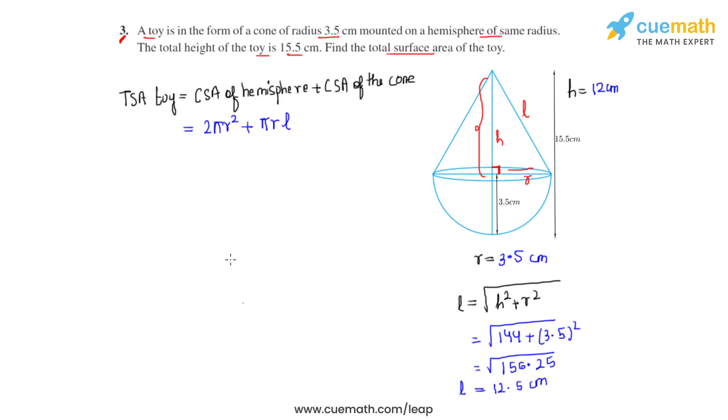Now we can substitute all of these values back into the formula to find the total surface area of the toy. We can see is πr is common to both the terms so we can take that out. We are left with 2r + l inside the brackets. Let's substitute the values: 22/7 × 3.5, which is multiplied to 2 × 3.5 + 12.5.